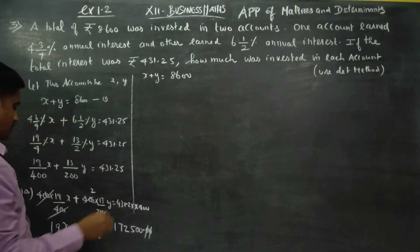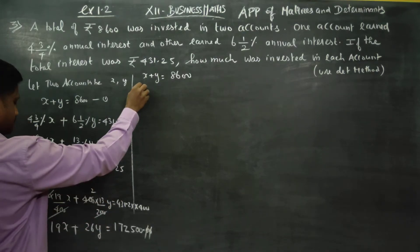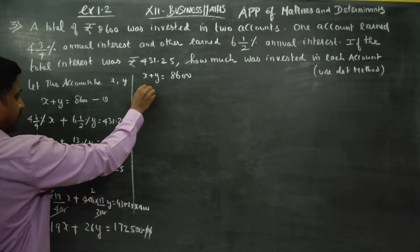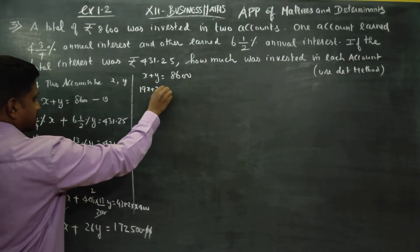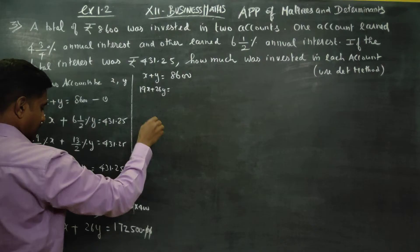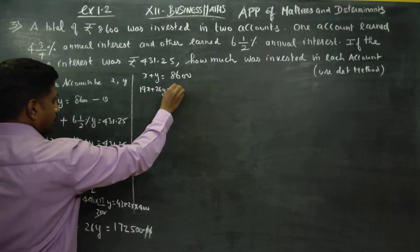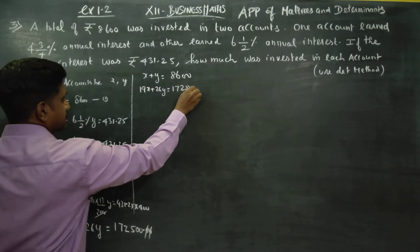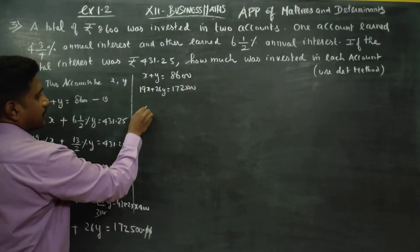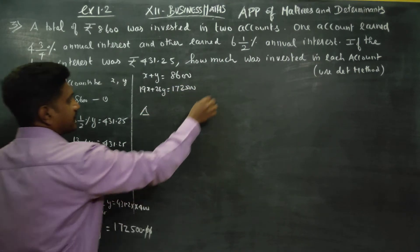19x plus 26y is equal to 1,72,500. Now we will start our delta calculation.